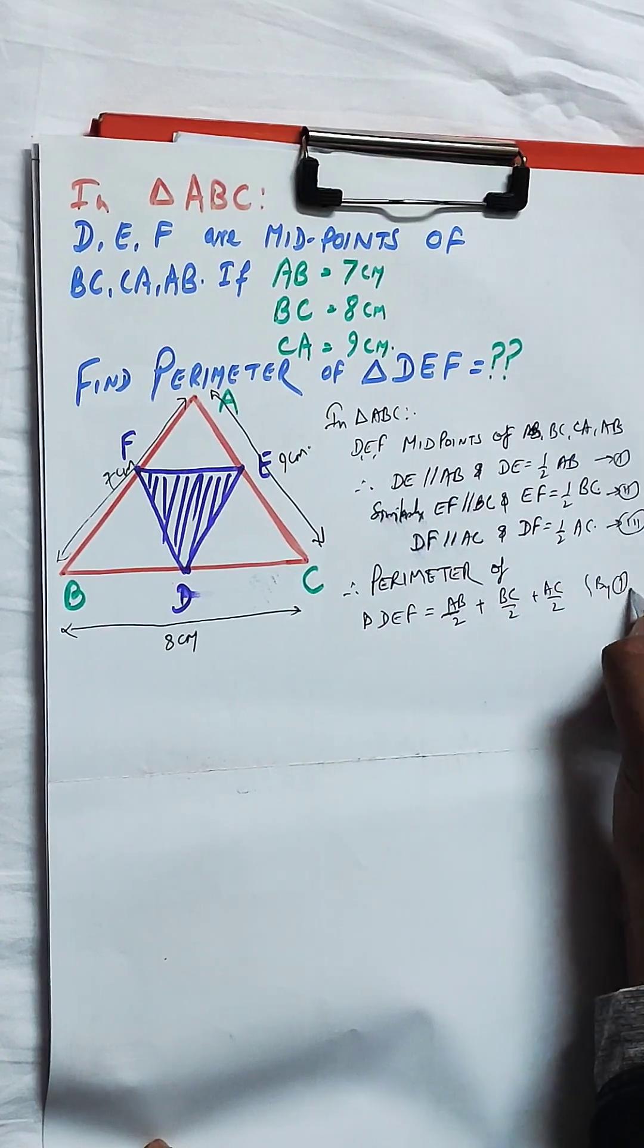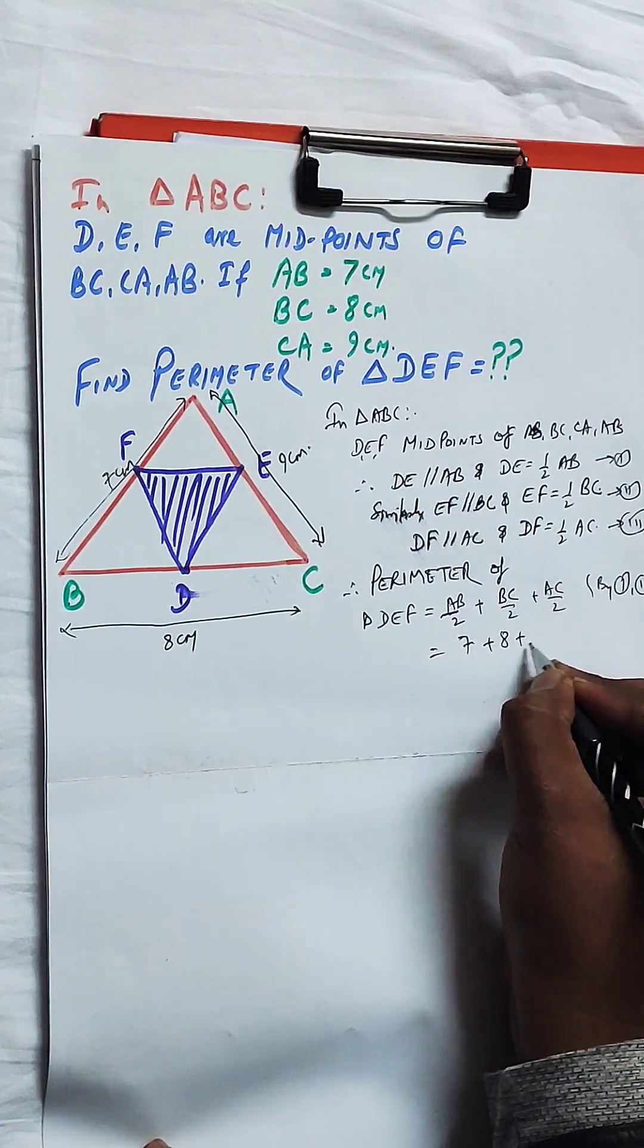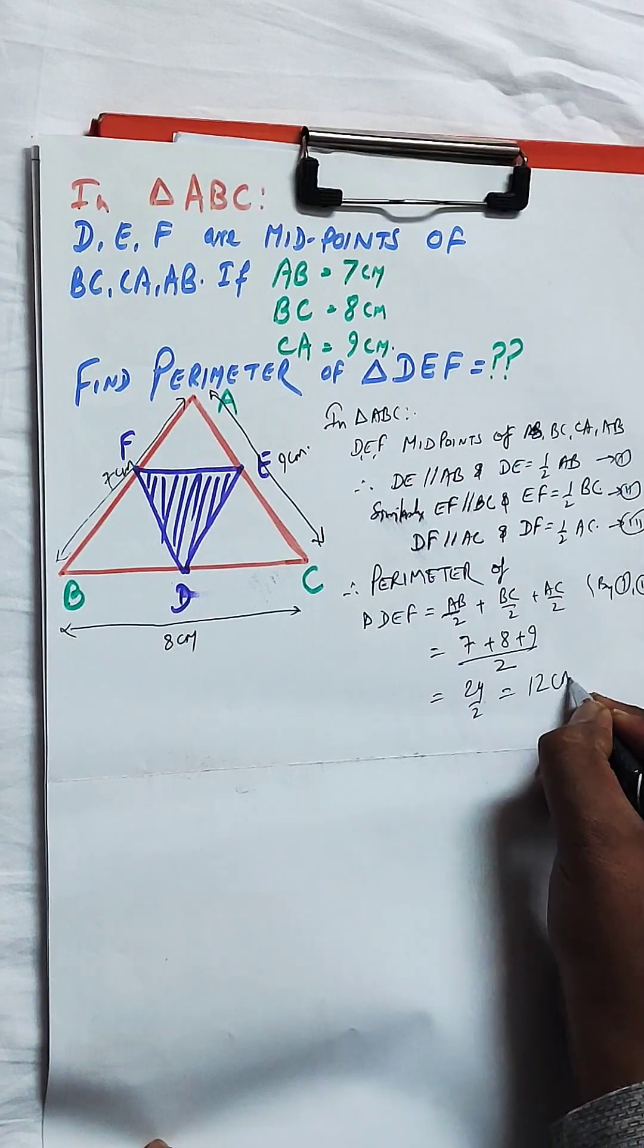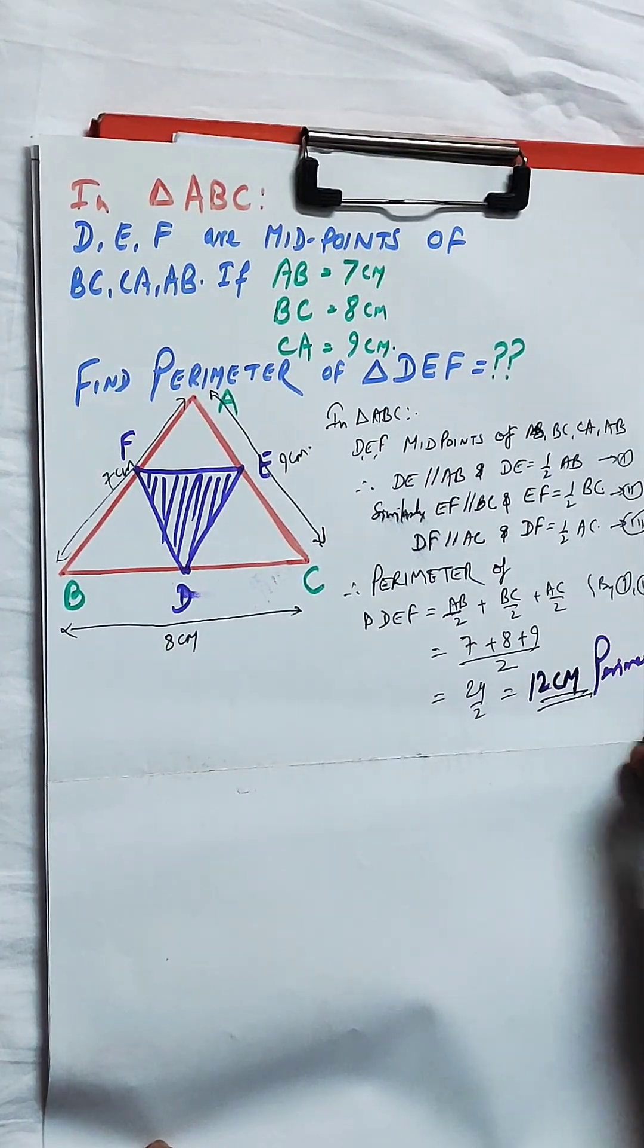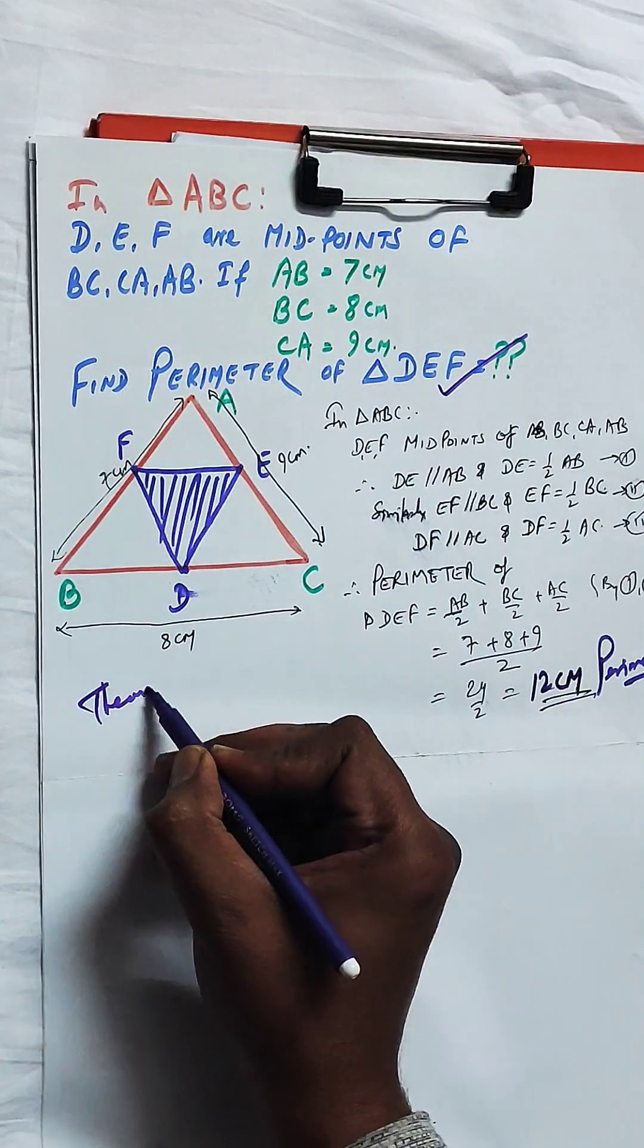And the perimeter of the triangle DEF which is found by joining the midpoints of the three given sides of AB, BC and CA is equal to half of the sum of the perimeter of the original triangle ABC, that is 24 by 2 which is equal to 12 cm.